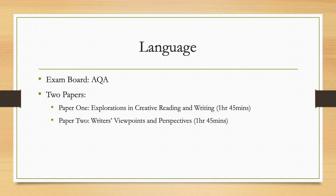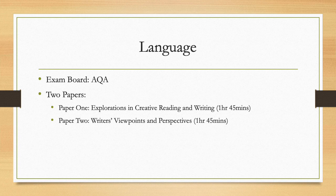The exam board for both your Language and Literature GCSEs is AQA, so it's handy to get on their website and get to grips with the exam papers. For Language, you have two papers. Paper 1 is called Explorations in Creative Reading and Writing — it's an hour and 45 minutes. The first four questions are focused on reading, building in skill and difficulty, and then you have 45 minutes to produce a writing response.